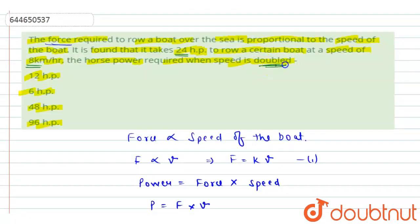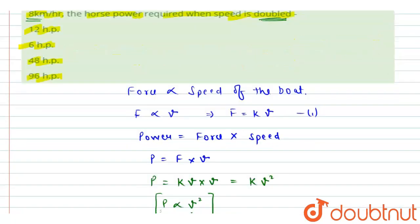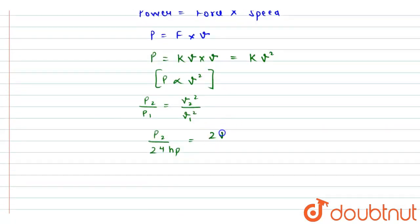The v2 is double the initial velocity, means v2 equals two times v1, whole square, divided by v1 whole square. We can cancel v1 square and we will be left with 2 square, that is 4.